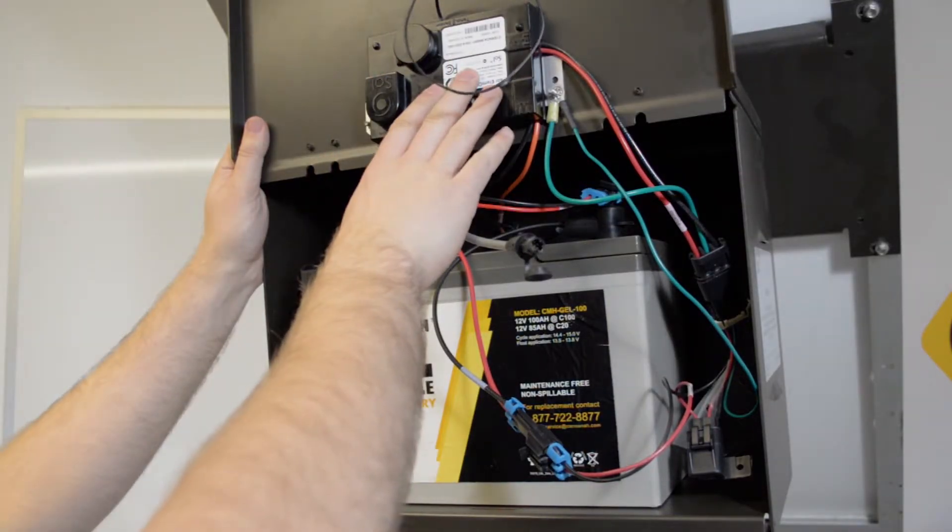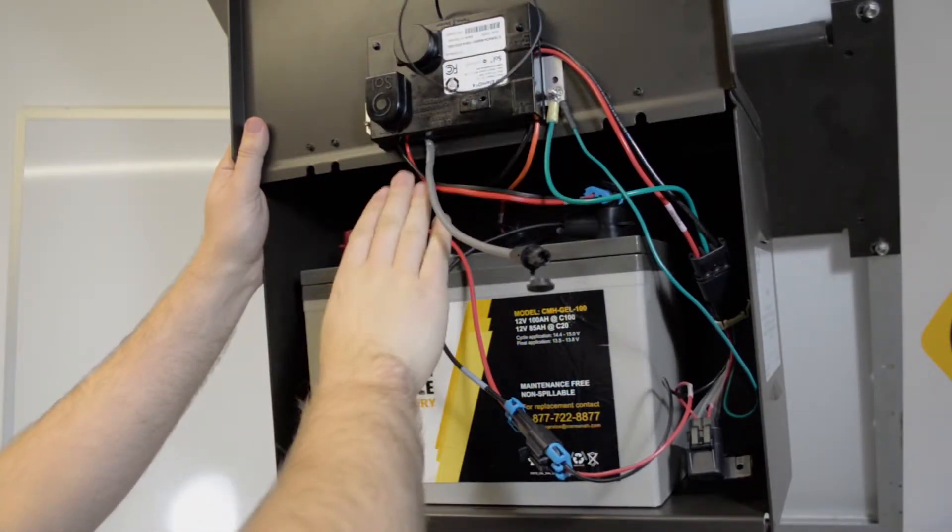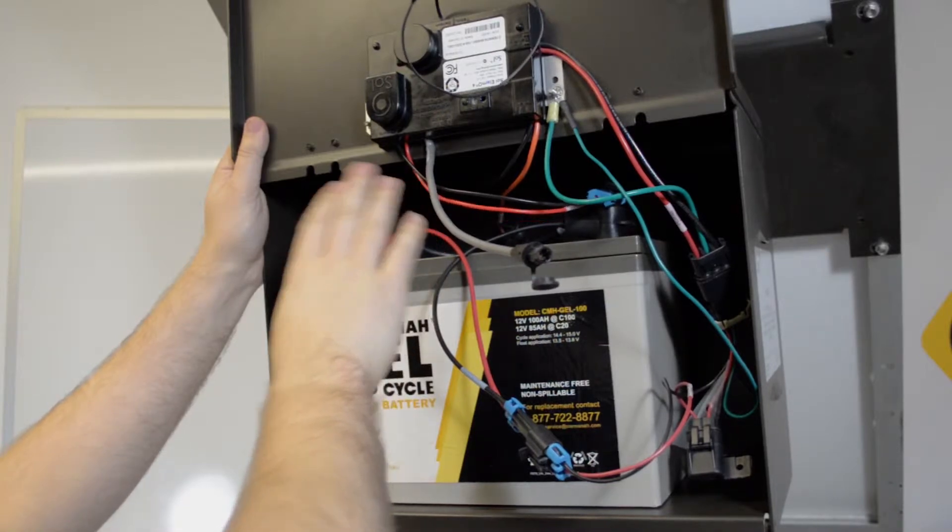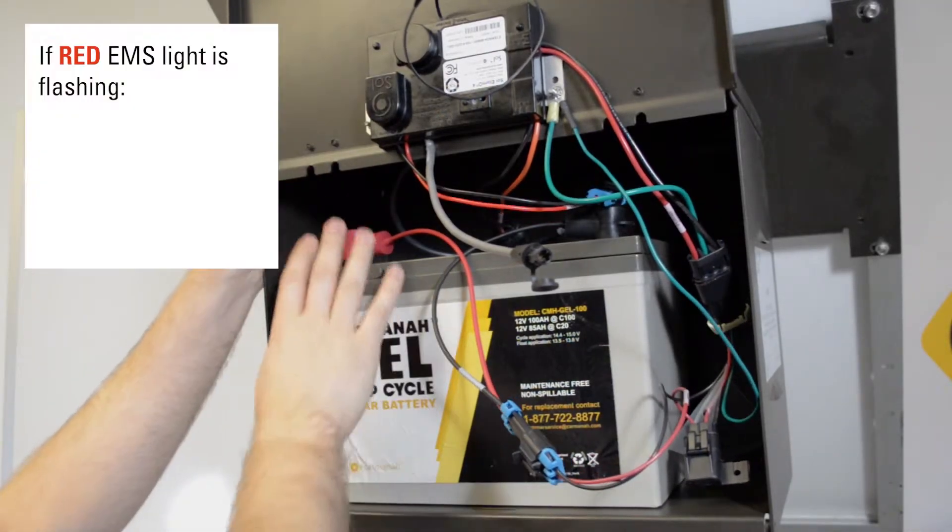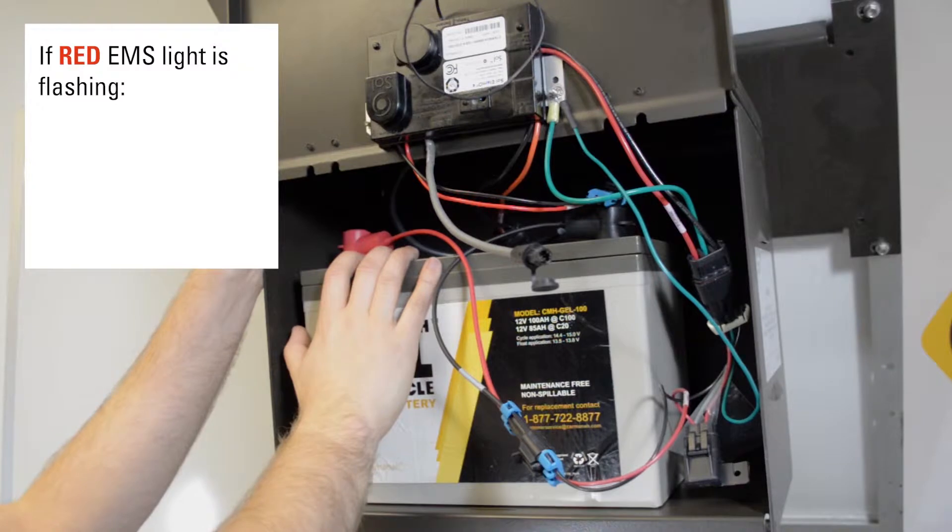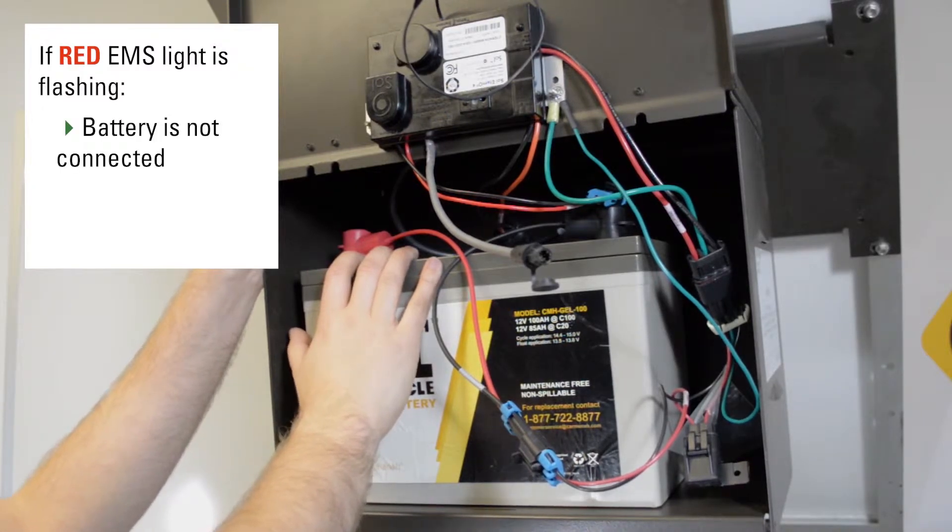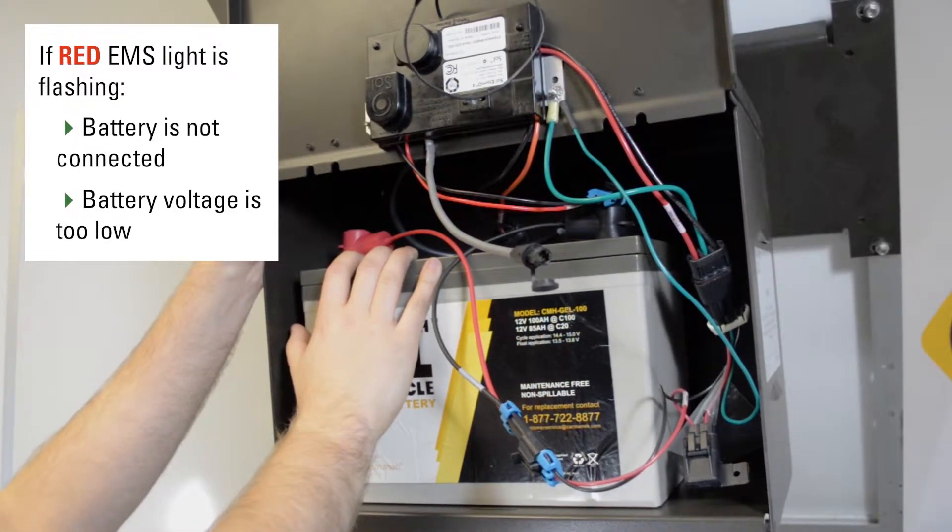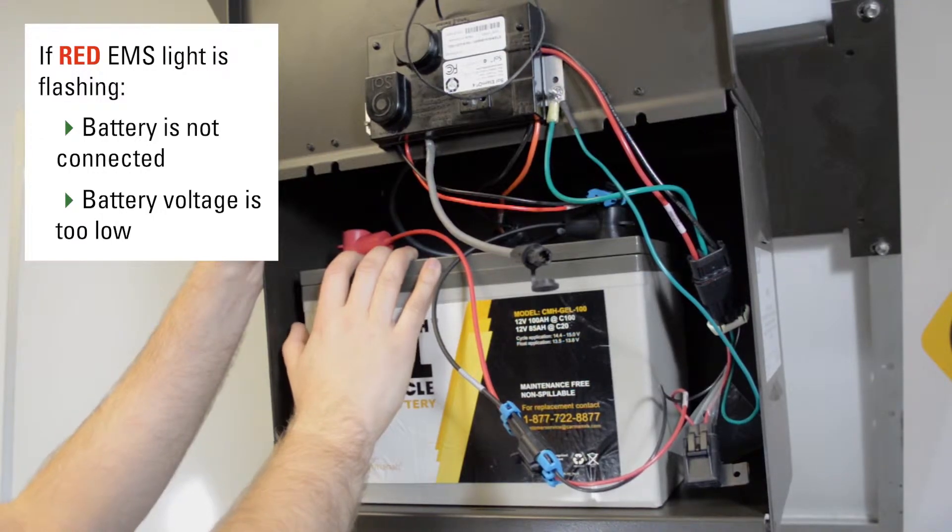So assuming you have a working EMS with the panels connected and the fixture operational, the focus is shifted to the batteries. If the red light seems to be flashing, that indicates that either the battery is disconnected or the voltage of the battery is far below what is expected and may need to be replaced.